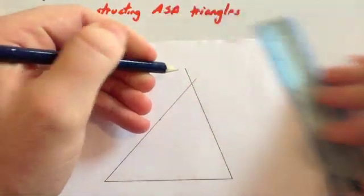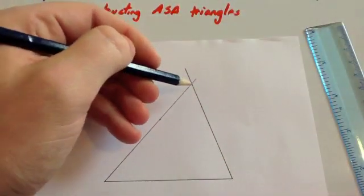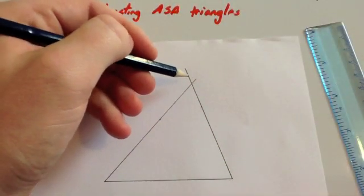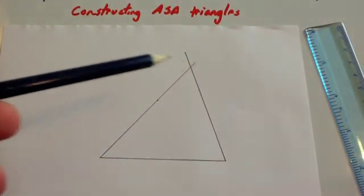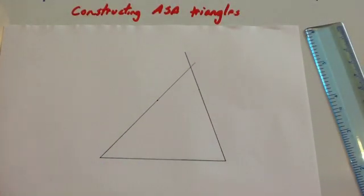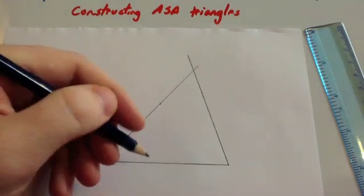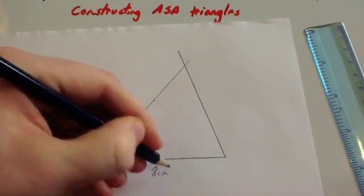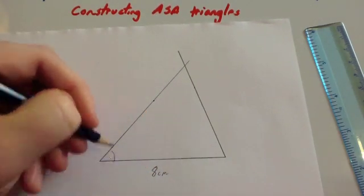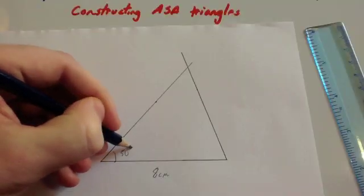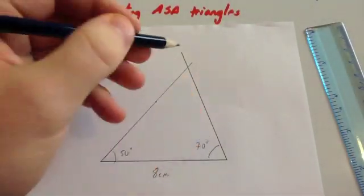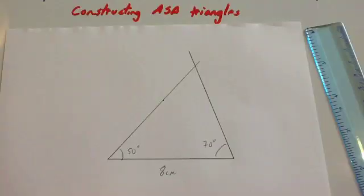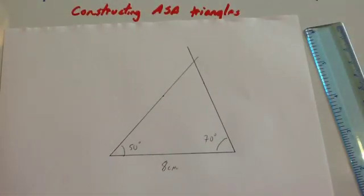You may have drawn a bit extra — depending on the question, you can leave the construction lines or rub them out. Now label it: 8 centimeters on the bottom, 50 degrees on this side, and 70 degrees on the other. That's your angle-side-angle triangle.